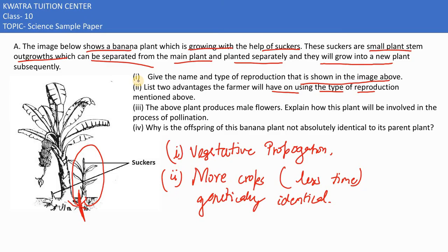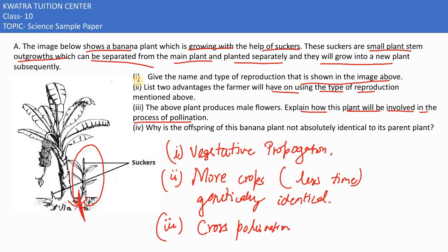The third part states that the above plant produces male flowers. This plant would be involved in cross pollination — it sends pollen from the anther to the female reproductive part of another plant, resulting in cross pollination.